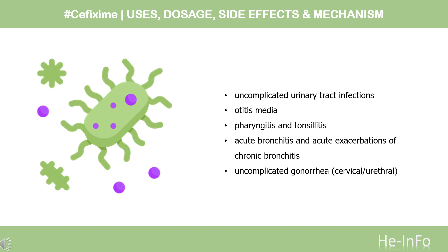2. Otitis media, caused by Haemophilus influenzae (beta-lactamase positive and negative strains), Moraxella catarrhalis (most of which are beta-lactamase positive), and S. pyogenes. 3. Pharyngitis and tonsillitis, caused by S. pyogenes. 4. Acute bronchitis and acute exacerbations of chronic bronchitis, caused by Streptococcus pneumoniae and Haemophilus influenzae (beta-lactamase positive and negative strains).